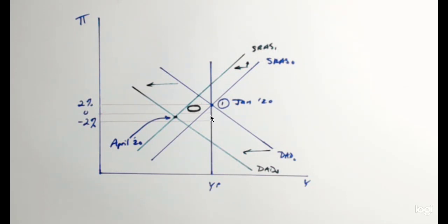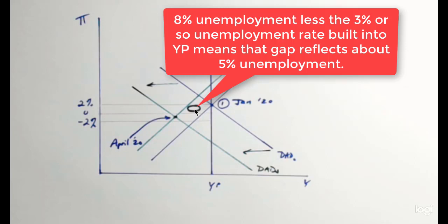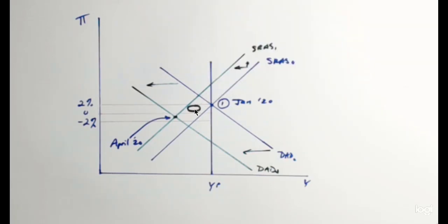When we have full employment at potential YP, there's always about 3% unemployment in a natural long-run economy. So that distance is really about 12% between long-run potential and the April 2020 dot. Now it's early 2021. The unemployment rate has been chopped down to about half of what it was — now about 8%, meaning that gap represents about 5% unemployment. The inflation rate is back up in positive territory, so we're basically in this black oval I have drawn here.